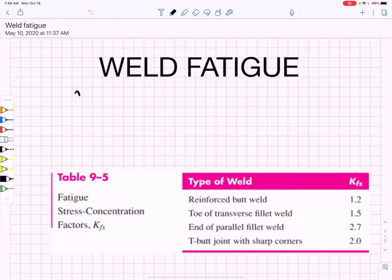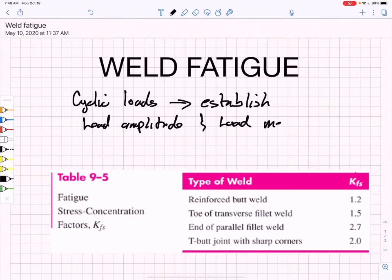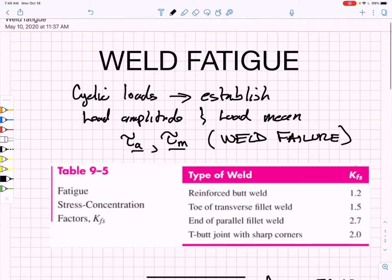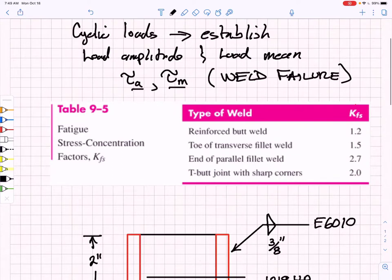The first thing we always have to do is characterize cyclic loads. Since we are talking about welds, we are going to be using a shear stress amplitude and a shear mean stress, because shear is the way we describe weld failure. We're going to have to adjust all of our thinking about fatigue and recast it in terms of shear stresses.